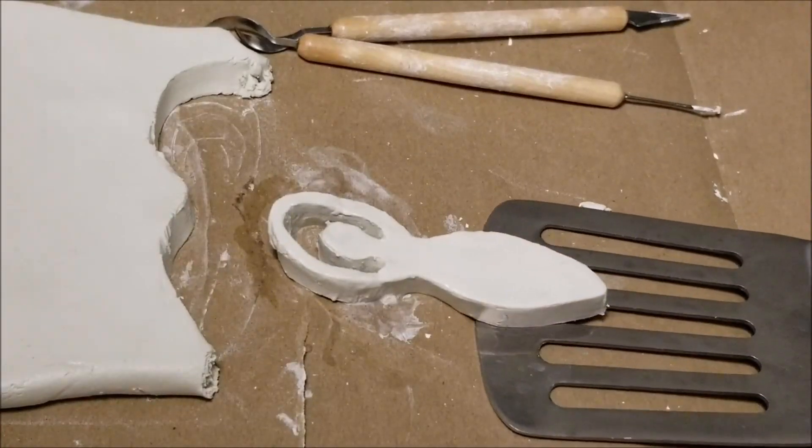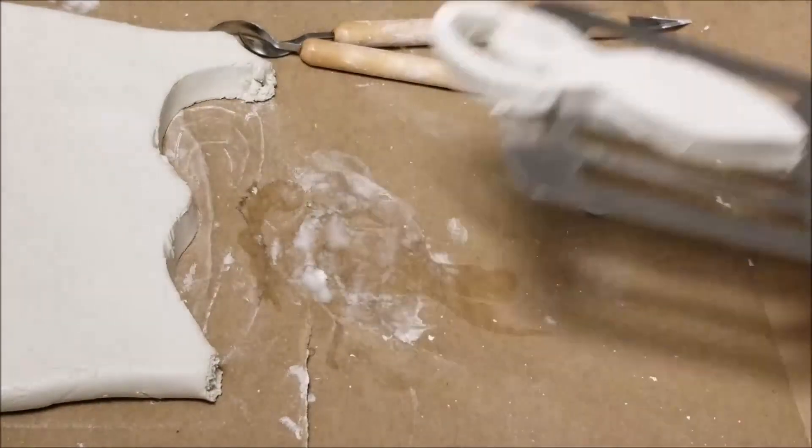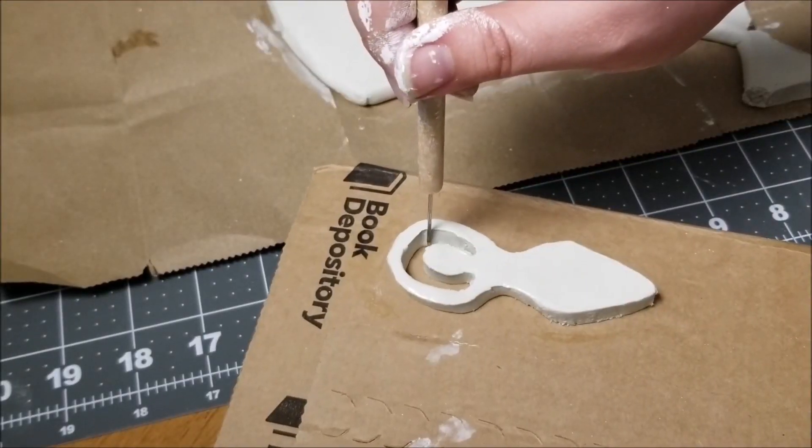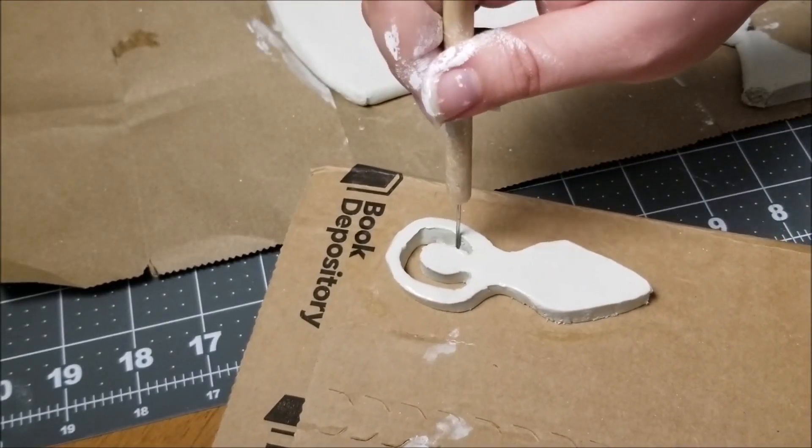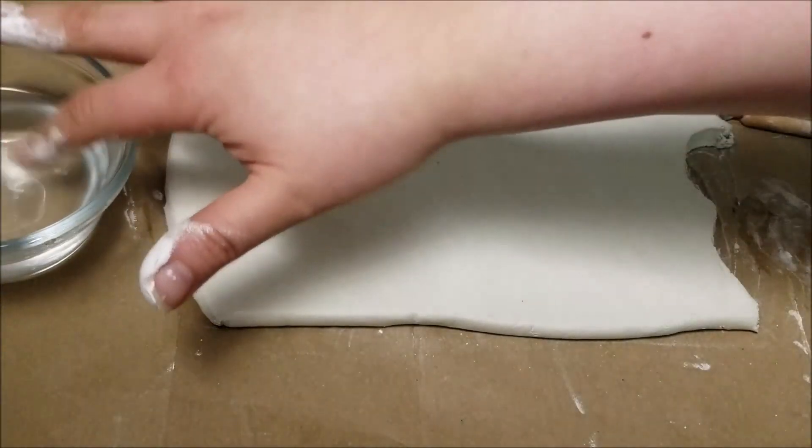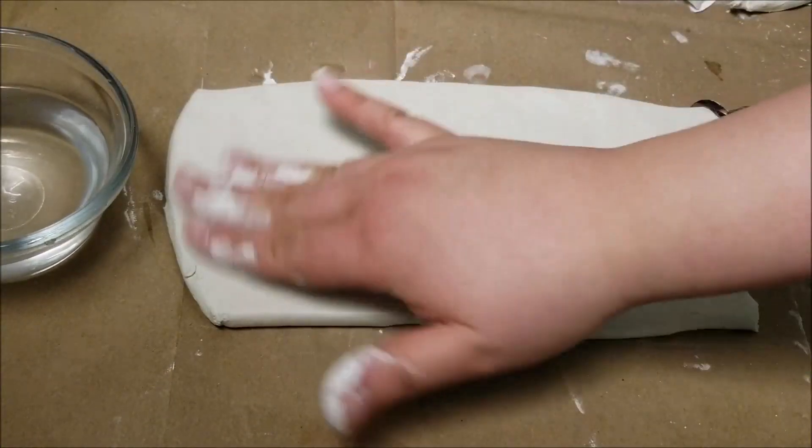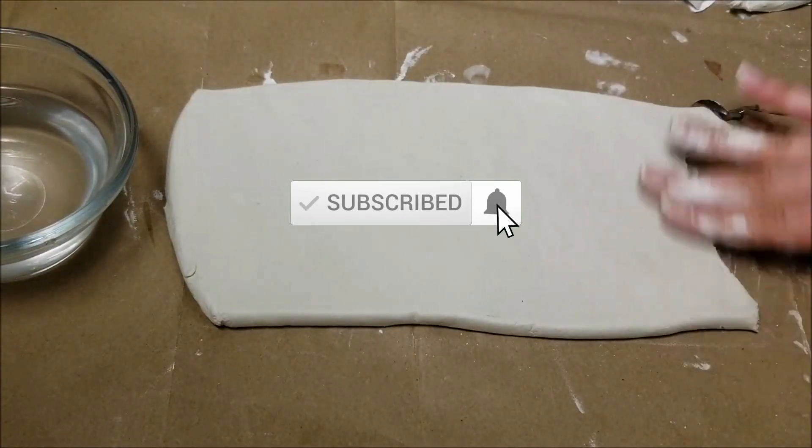I used a spatula to transfer the sculpture to a piece of cardboard to dry before moving on to the next cutout. During the whole time I'm making my cuts, I'm making sure that I keep on wetting the surface of the clay every five minutes or so. For one thing, it helps with preventing the clay from drying out, but as a bonus, it's helping to make my template stick to the clay so it doesn't shift.